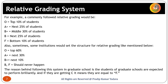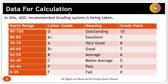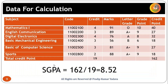The grading system recommended by UGC — the University Grants Commission — is an example of the absolute grading system. Grade points are decided as: 90 to 100 is O, 80 to 89 is A plus, 70 to 79 is A, 60 to 69 is B plus, 50 to 59 is B, and then C, P, and F.